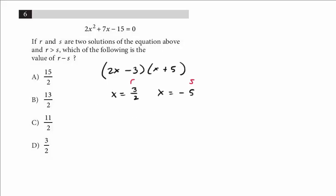And so that means we want 3 halves minus negative 5. So that's really going to be, I'll just do it here.